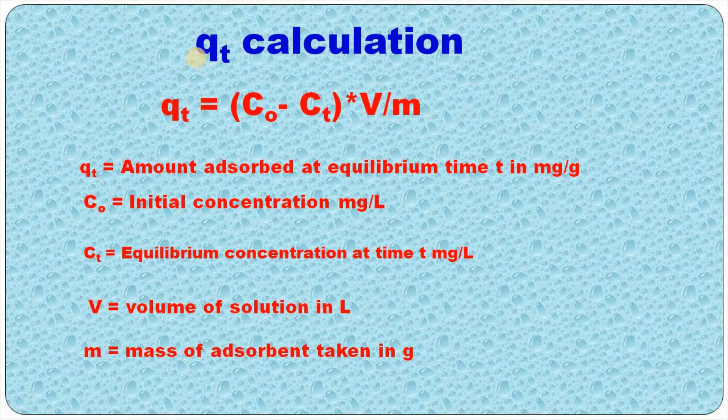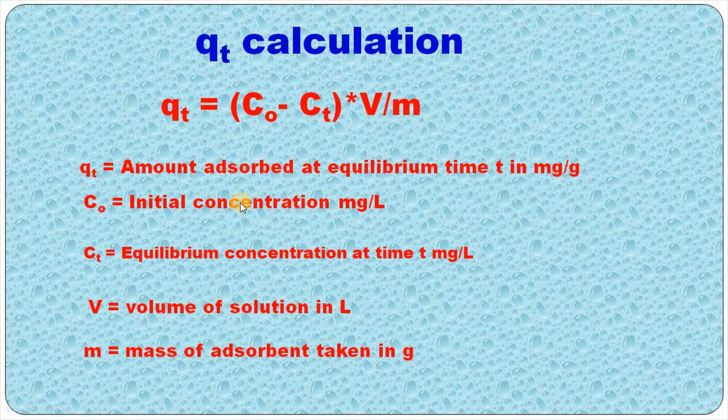QT can be written as C0 minus CT into V divided by M, where QT is the amount adsorbed at equilibrium time T in milligram per gram.